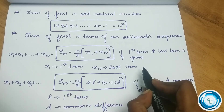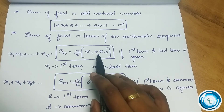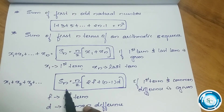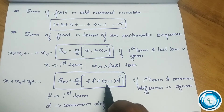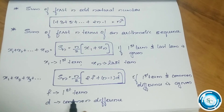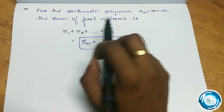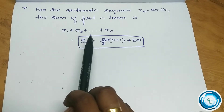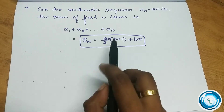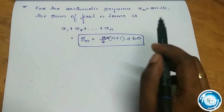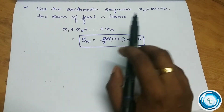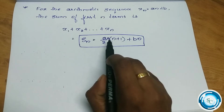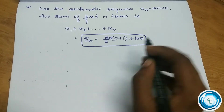We can also calculate using the first term and common difference: Sn equals n by 2 into (2f plus (n minus 1) into d). If xn equals an plus b, then the sum of the first n terms is Sn equals an by 2 into (n plus 1) plus bn.